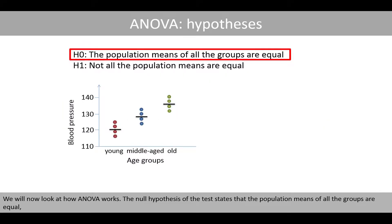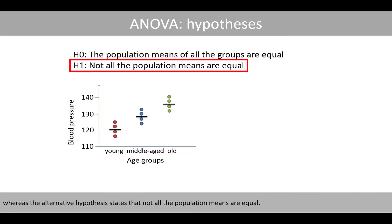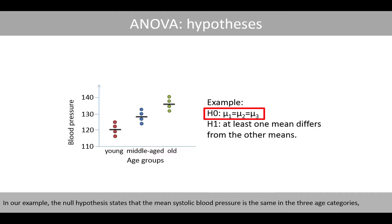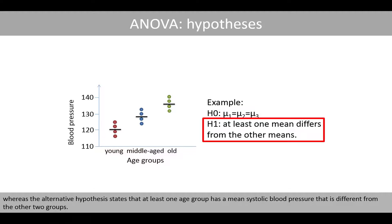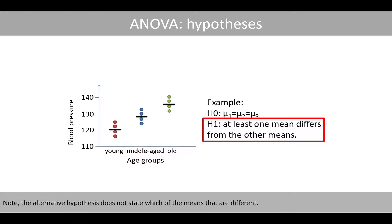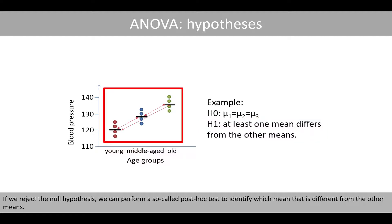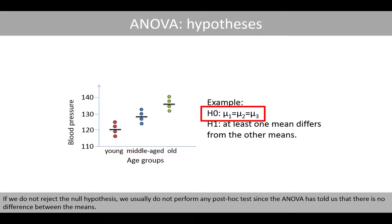We'll now have a look at how ANOVA works. The null hypothesis of the test states that the population means of all the groups are equal, whereas the alternative hypothesis states that not all the population means are equal. In our example, the null hypothesis states that the mean systolic blood pressure is the same in the three age categories, whereas the alternative hypothesis states that at least one age group has a mean systolic blood pressure that is different from the other two groups. Note that the alternative hypothesis does not state which of the means that are different. If we reject the null hypothesis, we can perform a so-called post-hoc test to identify which mean is different from the other means. If we do not reject the null hypothesis, we usually do not perform any post-hoc test since the ANOVA has told us there is no difference between the means.